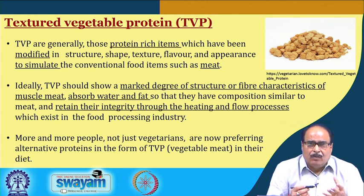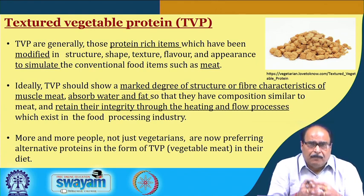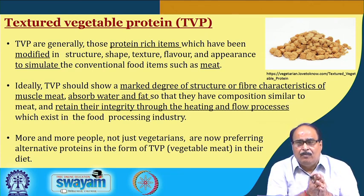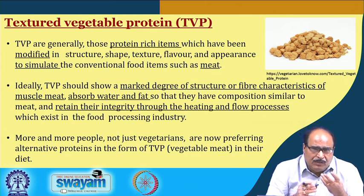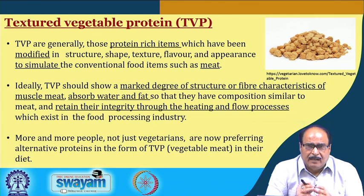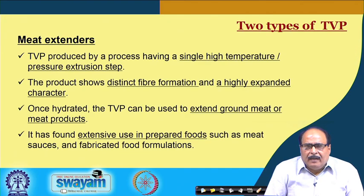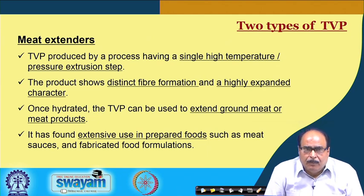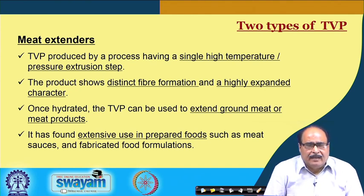Nowadays, more and more people — not just vegetarians — are preferring alternative proteins in the form of TVP, textured vegetable protein. Textured vegetable proteins are sometimes known as vegetable meat and are very good products for vegetarian people or others who want to enjoy the texture of animal protein from vegetable sources. Depending upon the characteristics of the TVP produced using different process variables, these products can be categorized into two forms: meat extenders and meat analogs.